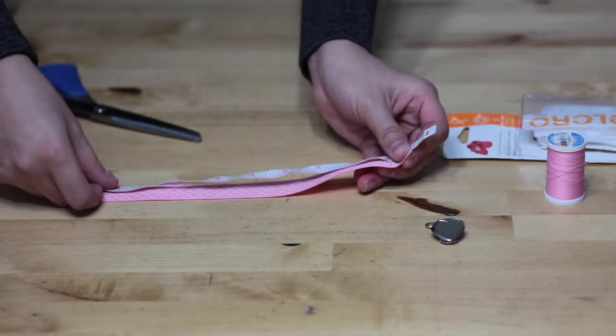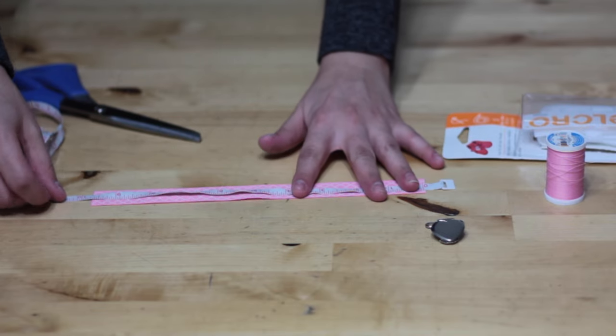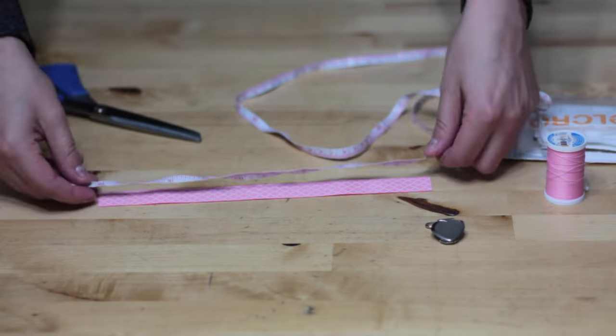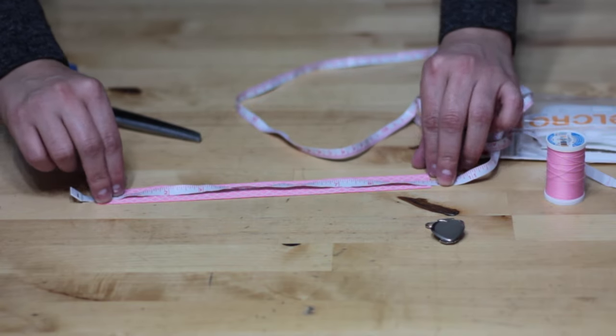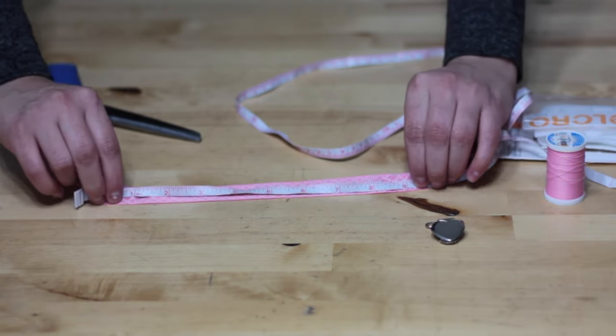Okay, let's get started! So first thing we got to do is measure our ribbon. For my clip, what I did was I cut a piece of ribbon that was ten inches long.